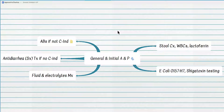The major contraindication to antibiotic treatment in acute diarrhea is a child with bloody diarrhea who has no fever, especially with the presence of risk factors for enterohemorrhagic E. coli. This is the surest contraindication for antibiotic treatment in diarrhea.